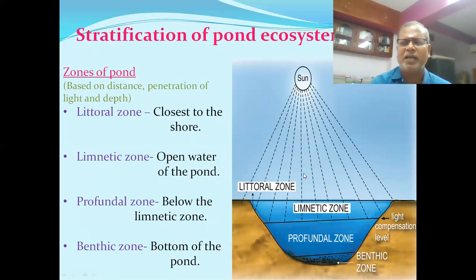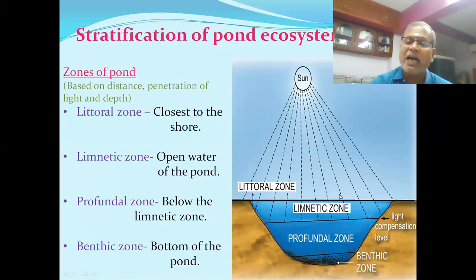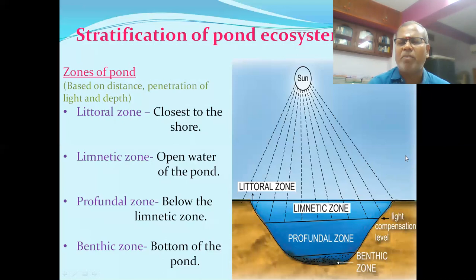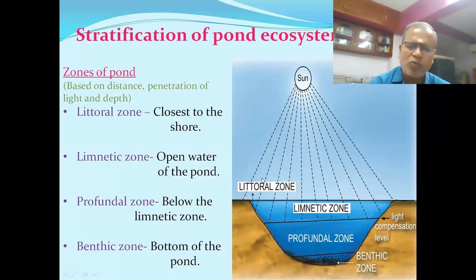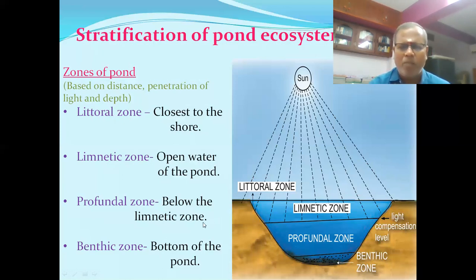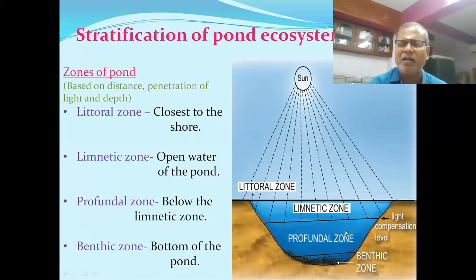Simply, there are three zones: littoral, limnetic, and profundal. There is also a benthic zone where benthic organisms live. In the littoral and limnetic zones, productivity is high. The littoral zone is closest to the shore; the limnetic zone is the open water of the pond; the profundal zone is below the limnetic zone, where light penetration is completely absent.